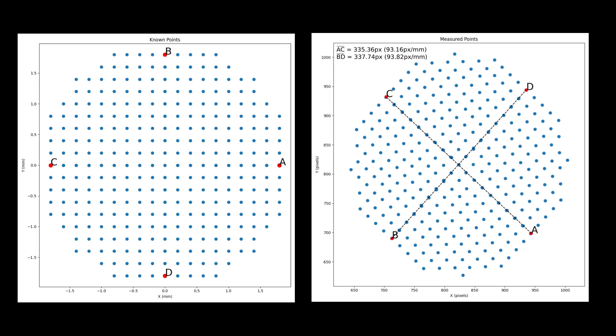But we also have an issue that the lines AC and BD aren't perpendicular and aren't equal in length. So we also have some unequal scaling going on.